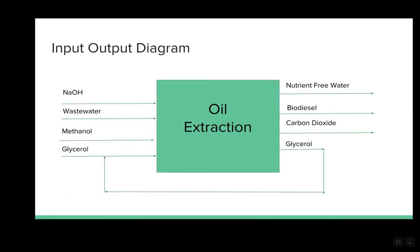This is our input-output diagram of our process. For algae cultivation, nitrogen and phosphorus-rich wastewater and glycerol are used as raw materials to produce the microalgae paste, which is further processed by extracting the triglycerides. Water and carbon dioxide are also products of the fermentation.